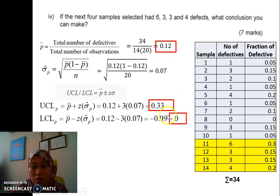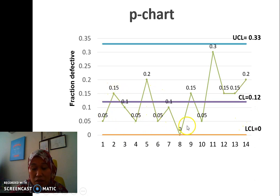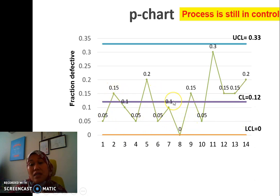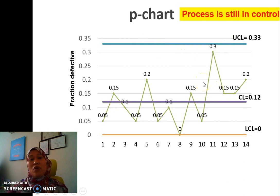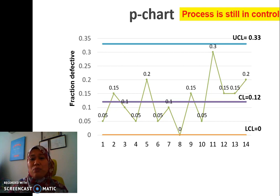We now have three updated values for the control chart. The fraction defectives are plotted, the upper control limit has changed to 0.33, P-bar has changed to 0.12, and LCL equals 0. Plotting the fraction defectives, we find that the process is still in control because it does not exceed the UCL. So every time we add more samples, we need to recalculate P-bar, sigma P, UCL, and LCL, and re-plot to check whether the data goes beyond the UCL.